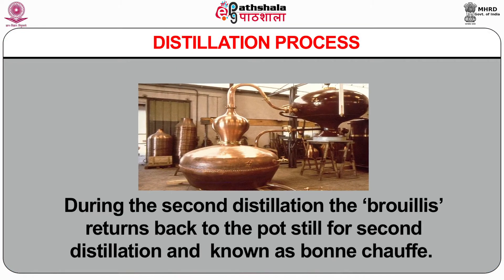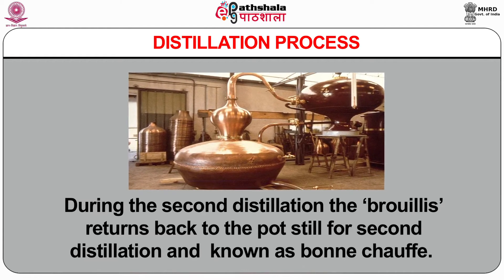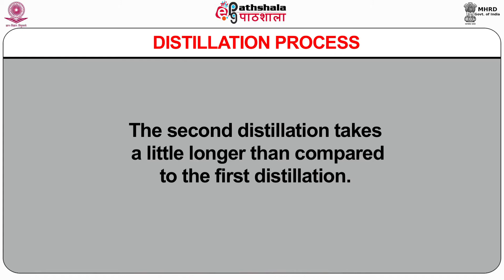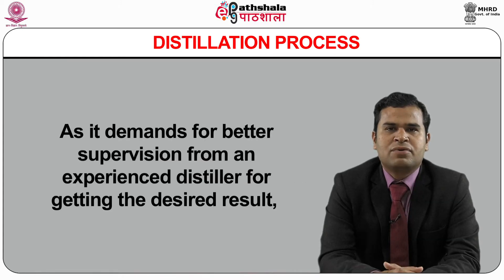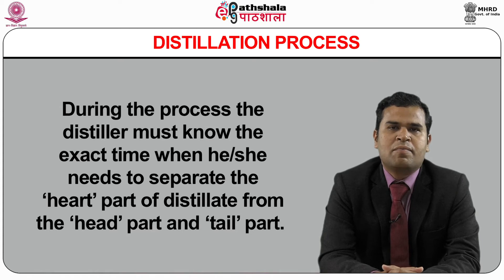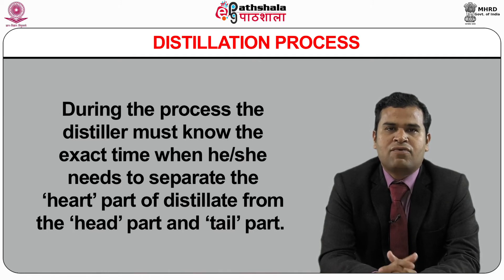The Brouillis is set for the second distillation. During the second distillation, the Brouillis is returned back to the pot still for the second distillation known as Bonne Chauffe. This takes a little longer than the first and demands better supervision from an experienced distiller. The distiller must know the exact time to separate the heart of the distillate from the head part and tail part. The head part is very high on alcohol, and the tail part lacks alcoholic strength. Both the head and tail are sent back and added to the Brouillis for further distillation.